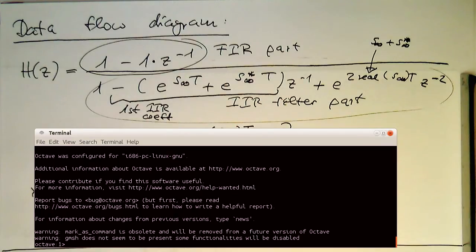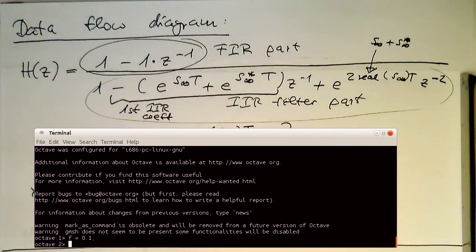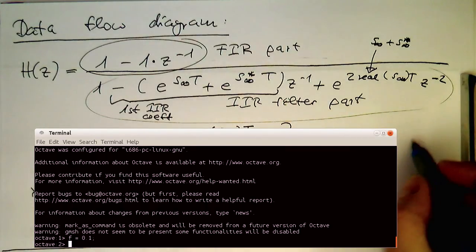So what we need to do is we need to create our parameters here for our resonator. Let's say the frequency is 0.1 and we just write this here in the corner here.